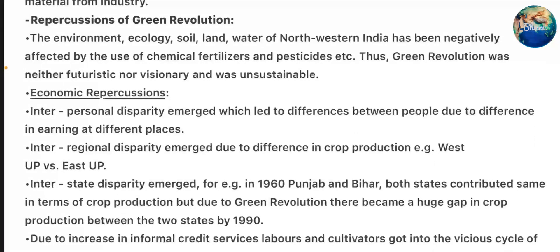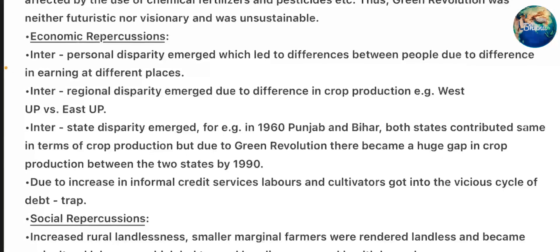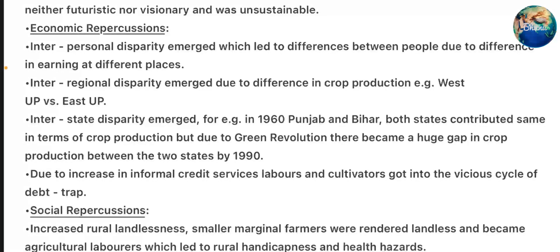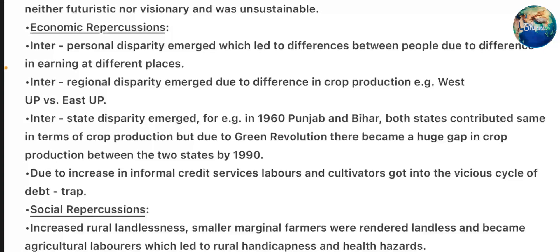Repercussions of Green Revolution: The environment, ecology, soil, land, and water of northwestern India have been negatively affected by the use of chemical fertilizers and pesticides. Thus, Green Revolution was neither futuristic nor visionary and was unsustainable. Economic repercussions: Interpersonal disparity emerged due to differences in income at different places. Interregional disparity emerged due to difference in crop production. For example, in 1960, Punjab and Bihar both contributed equally in terms of crop production, but due to the Green Revolution, a huge gap in crop production emerged between the two states by 1990.